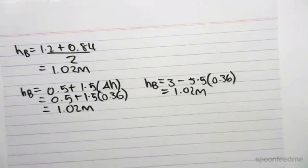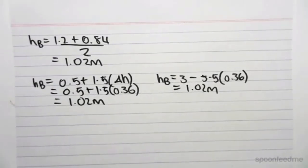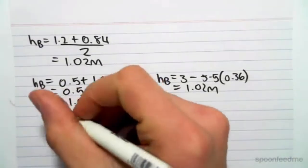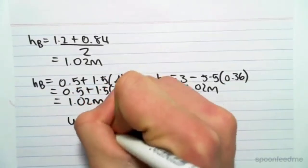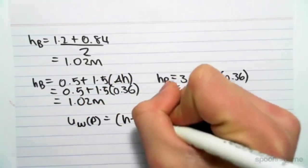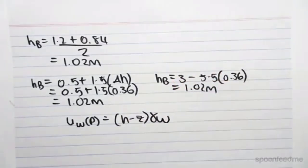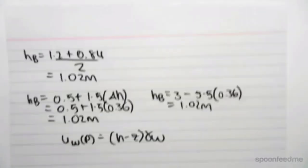Now we can find the pore water pressure. We know from the previous video that the pore water pressure was equal to H minus Z times gamma W. We know H, we just need to find Z.